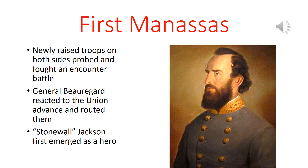Let's get to First Manassas, the first major battle of the Civil War, fought in Northern Virginia. Both sides had newly raised troops, neither well equipped or trained. A Northern force ran into General Beauregard at Manassas Junction, and the Confederates eventually routed a larger Union force. This is the battle where Stonewall Jackson first emerged as a hero — he and his brigade stood firm, and General Beauregard cried out to the other men to fall in behind Jackson, who was formed up like a stone wall.